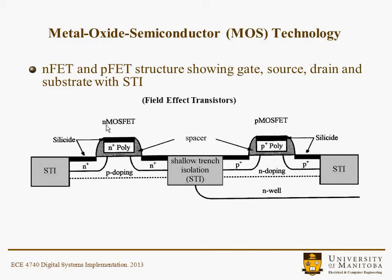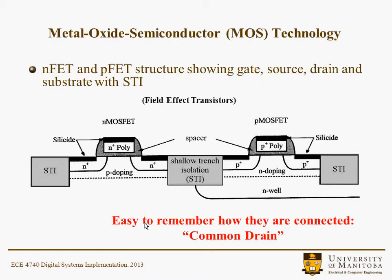The N refers to electrons being the carrier. The P refers to holes being the carrier. You'll also note that the P-type device is in an N-well and the N-type device is effectively in a P-well. It's quite easy to remember how these are typically connected up in a CMOS structure, in that they have a common drain — particularly if it's an inverter, so the drains are connected together.